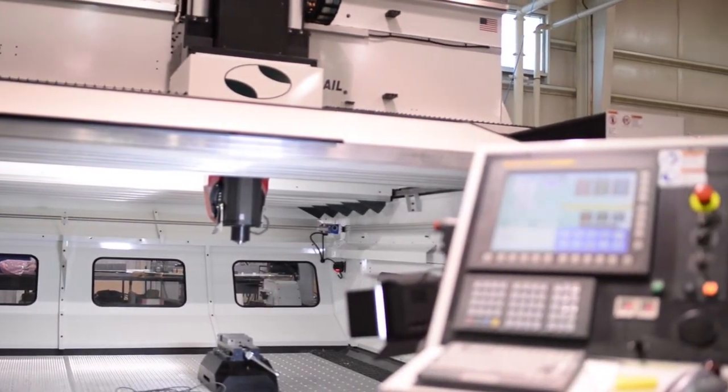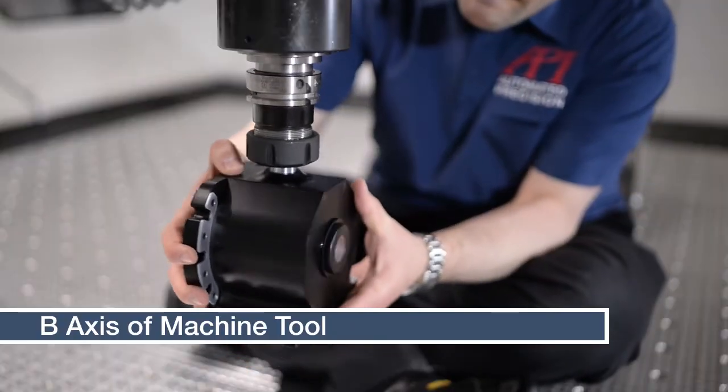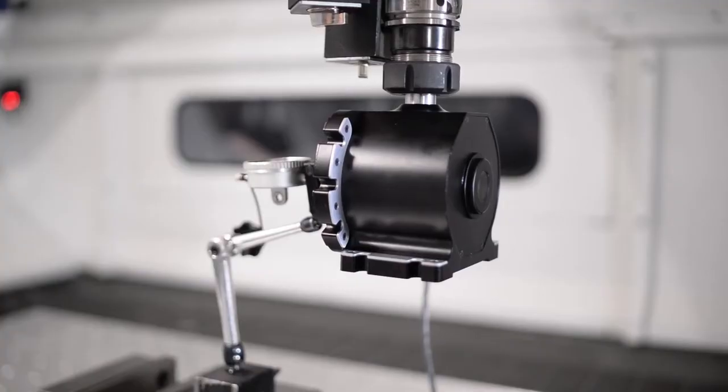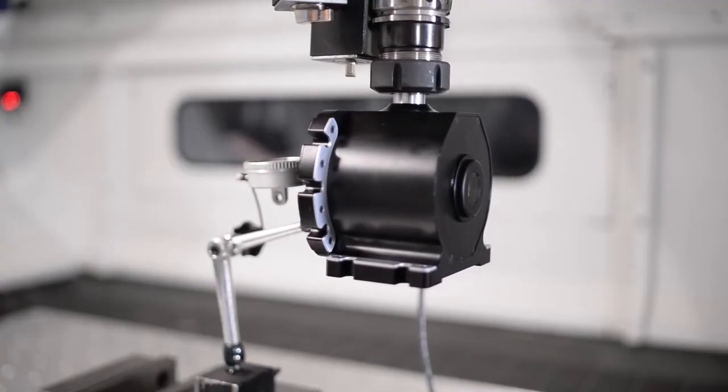Start off by mounting the swivel check in your machine in the selected configuration. For our machine's B axis, simply mount the swivel check into the spindle of the machine. Once that's done, ensure it's parallel with the plane of rotation.